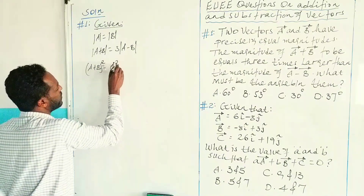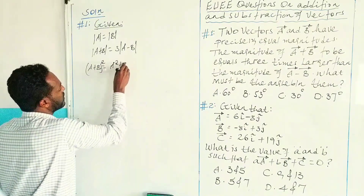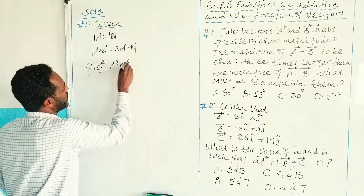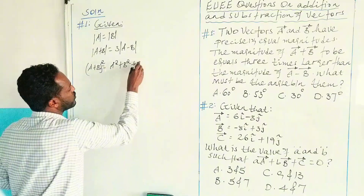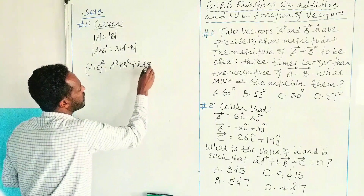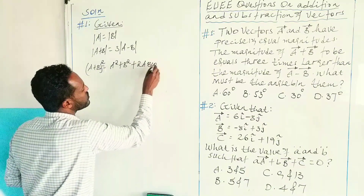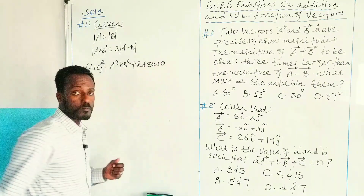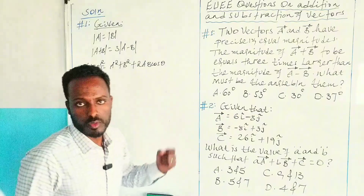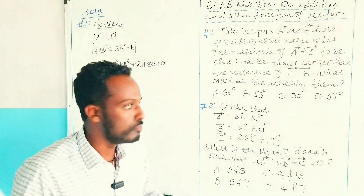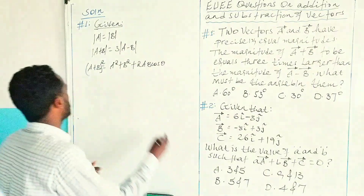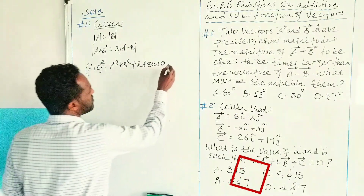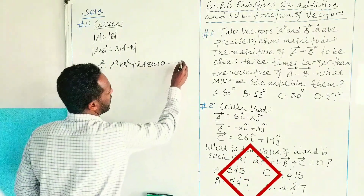A plus B, the whole square, or resultant squared, is equal to A squared plus B squared plus 2 times AB cos theta, where theta is the angle between vector A and B. Let's say this is equation 1.